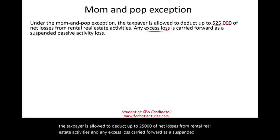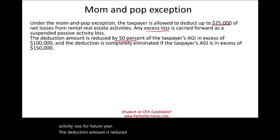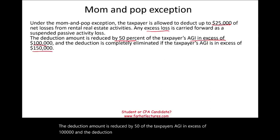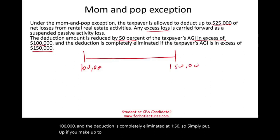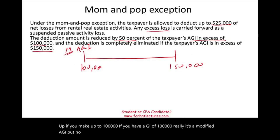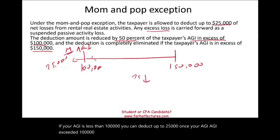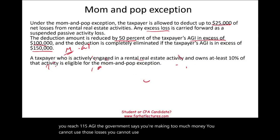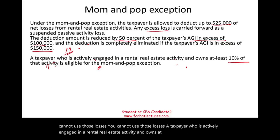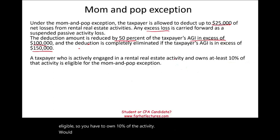The deduction amount is reduced by 50% of the taxpayer's AGI in excess of $100,000, and the deduction is completely eliminated at $150,000. So if your AGI is less than $100,000, you can deduct up to $25,000. Once your AGI exceeds $100,000, your $25,000 starts to phase down until you reach $150,000, at which point you cannot use those losses at all.